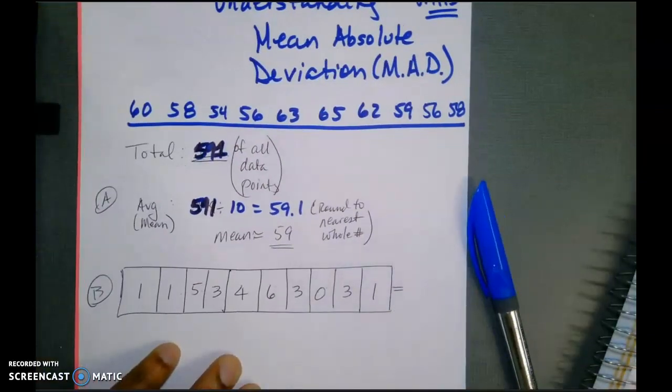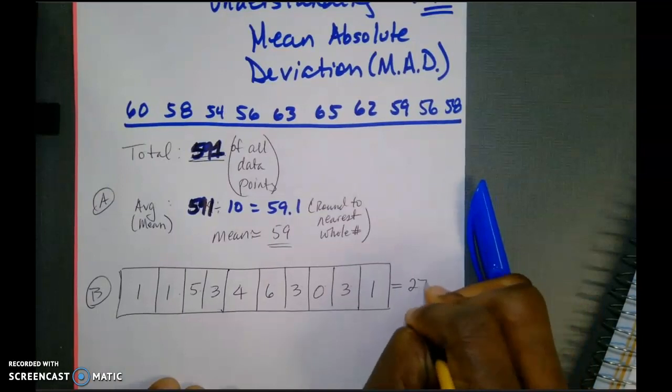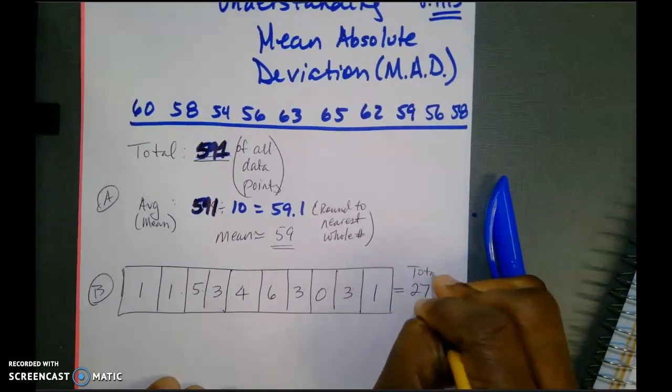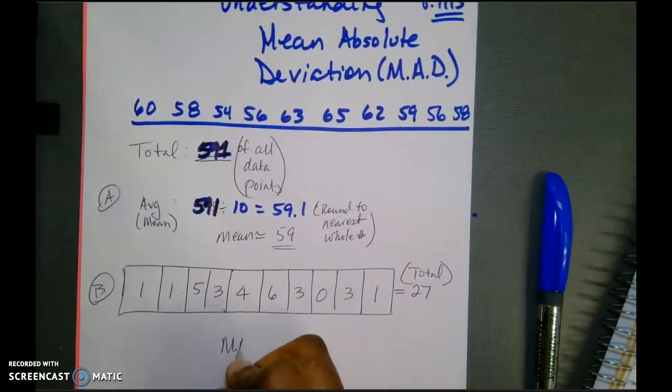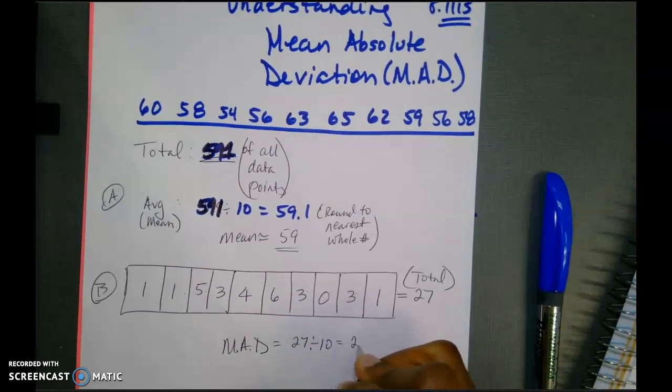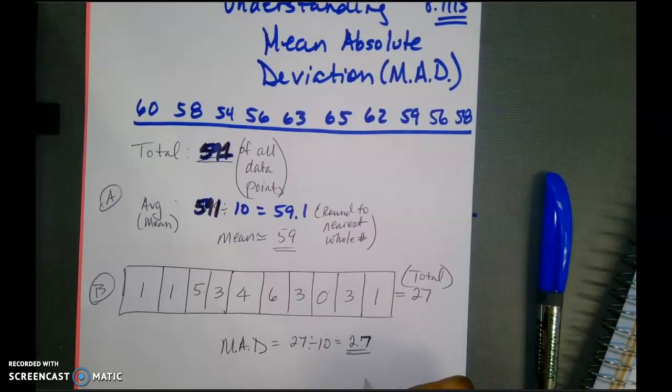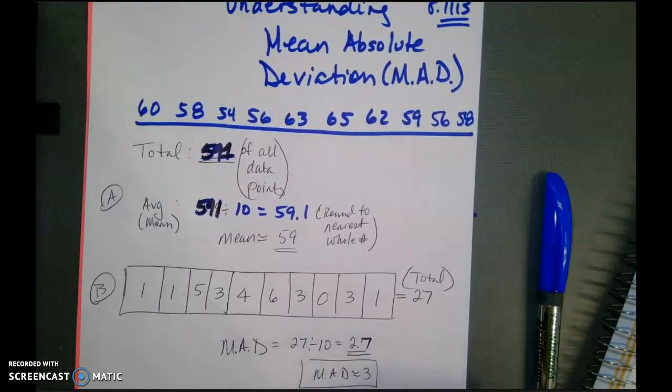So what I need to do at this point is I need to get the total of all of these numbers. That is going to be a total of 27. So once I have a total of 27, to find my mean absolute deviation, what I'm going to do is I'm going to take 27 and divide that by 10. That's going to give me a quotient of 2.7. If I'm going to approximate my mean absolute deviation to the nearest whole number, that gives me an answer of three. It's just that simple.